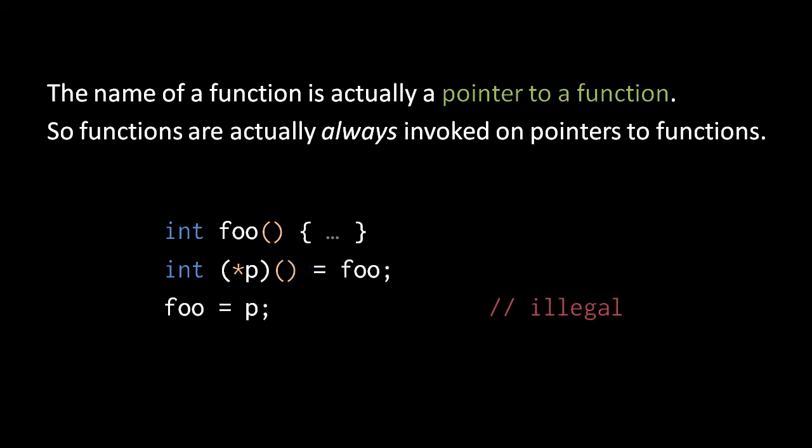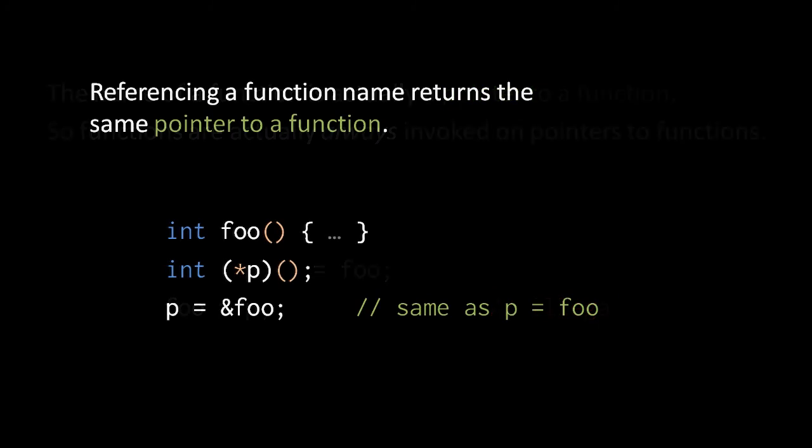Like an array name, a function name is a value, not a variable. This means that function names cannot be reassigned. Also, referencing a pointer to a function does not return a pointer to a pointer to a function, as you might expect, but rather simply returns the same pointer value. So assigning the reference of the function name foo to p does the same thing as simply assigning the name foo itself to p. I'm not sure why referencing a function name doesn't simply trigger a compilation error — it's not as if referencing function names does something useful.